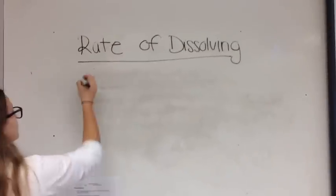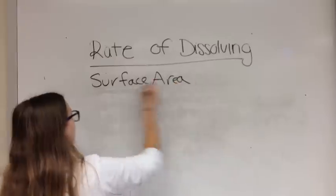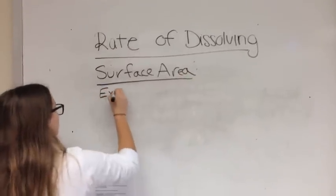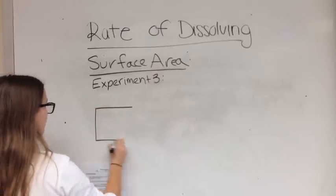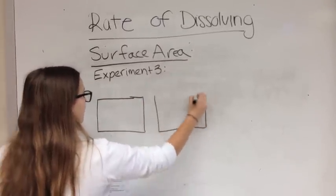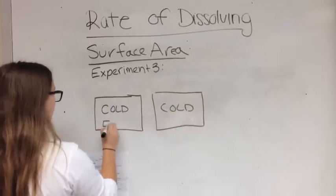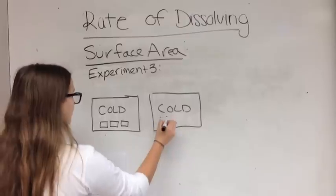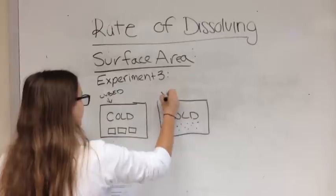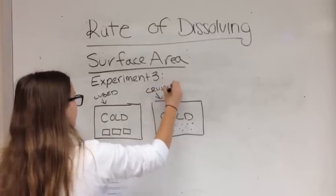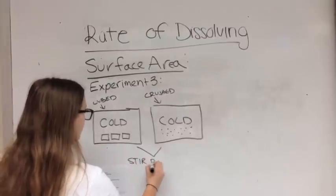For a final experiment, we will be showing how the surface area affects the rate at which a substance dissolves. We will be taking two beakers and filling them both with cold water. Add three sugar cubes to each container. The left is the whole sugar cube and the right is crushed sugar cubes. Here you will see the crushed sugar cubes dissolve faster than the whole sugar cubes.